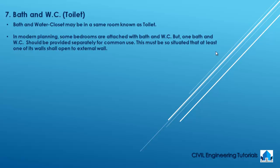Bath and water closet may be in the same room, known as a toilet. In modern planning, some bedrooms are attached with bath and WC, but one bath and WC should be provided separately for common use. This must be so situated that at least one of its walls shall open to an external wall.